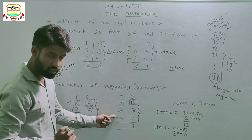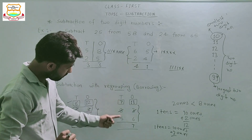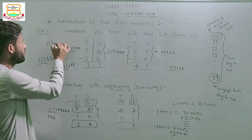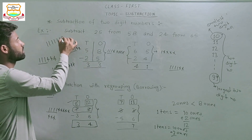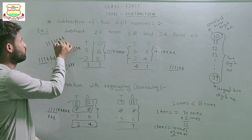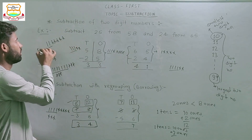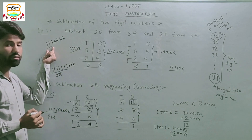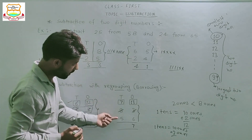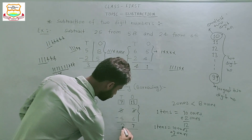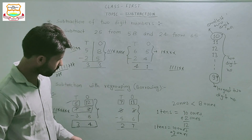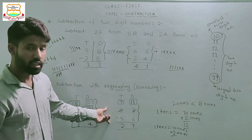Same process in the tens column: subtract 5 from 7. Draw 7 sticks, cut 5 — 1, 2, 3, 4 and 5. How many left? Count: 1 and 2. So 7 minus 5 equals 2. The result is 83 minus 56 equals 27.